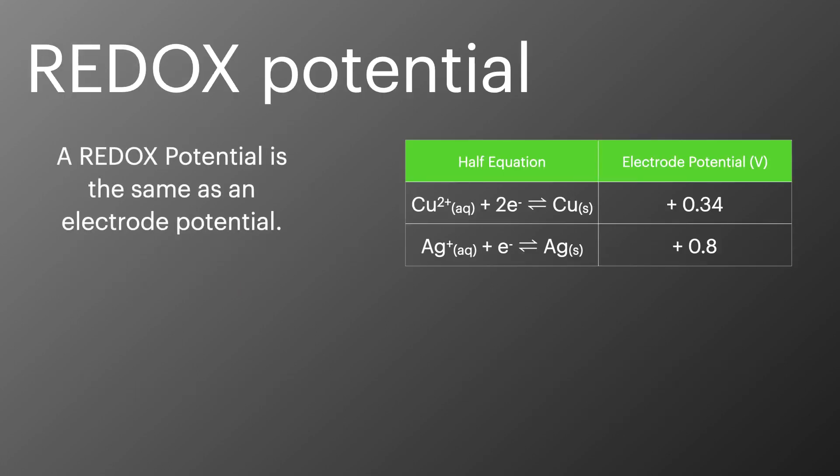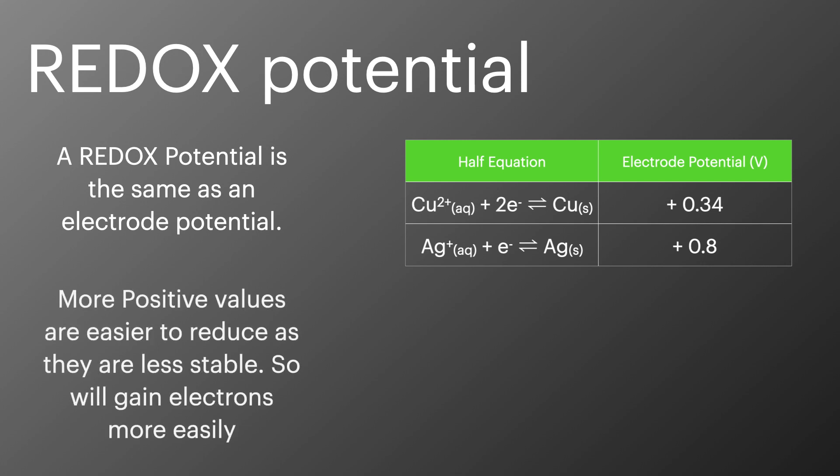A redox potential is the same as an electrode potential and can be used to predict the direction of redox reactions. The more positive values are easier to reduce as they are less stable and they will gain electrons more easily.